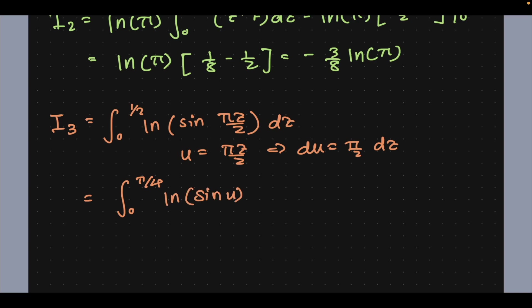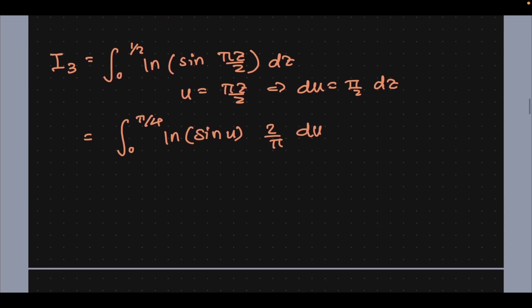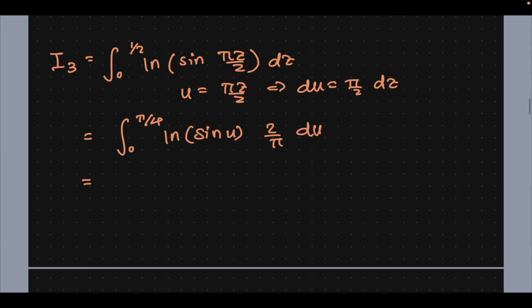Well the thing is we've already evaluated what the integral is in a past video of the circus of integrals playlist. I probably can add a card. So we have minus Catalan's constant over 2 minus π/4 times natural log of 2 as the answer for that integral.